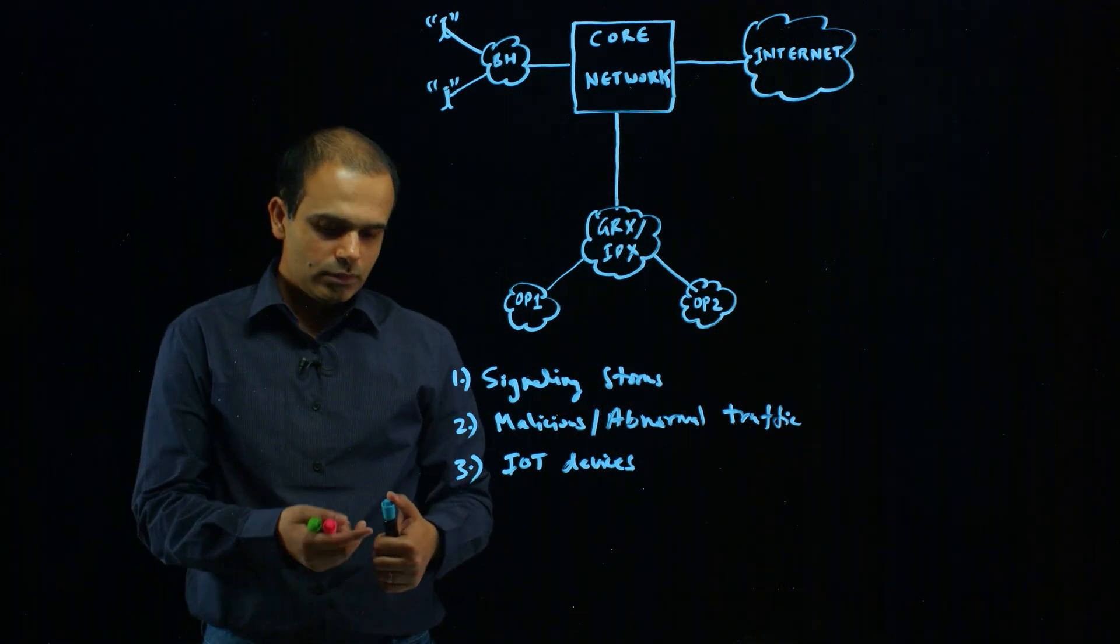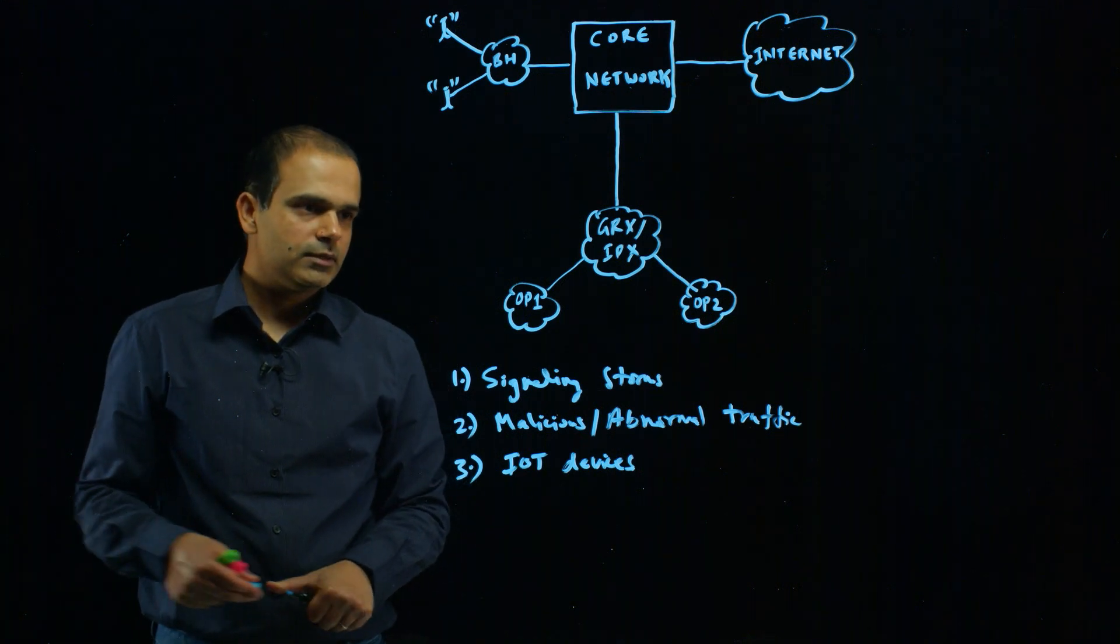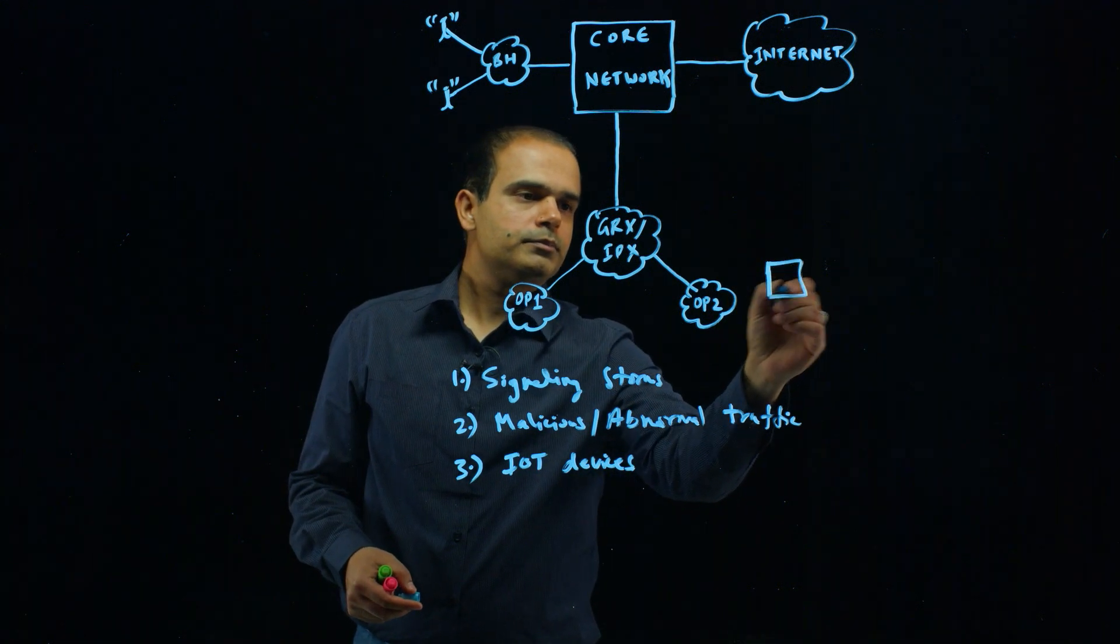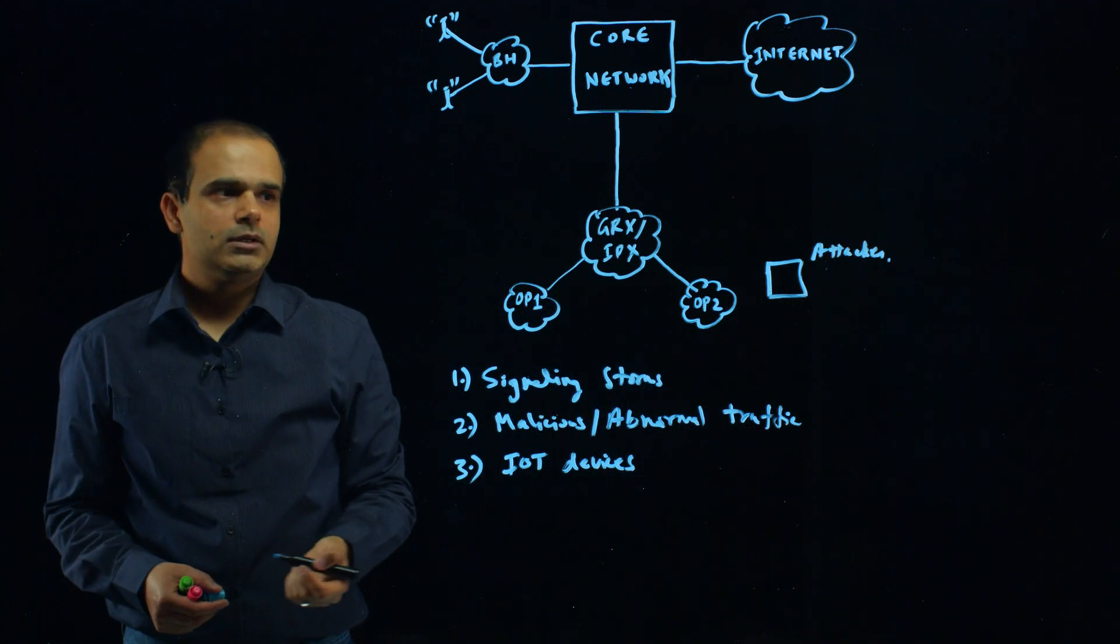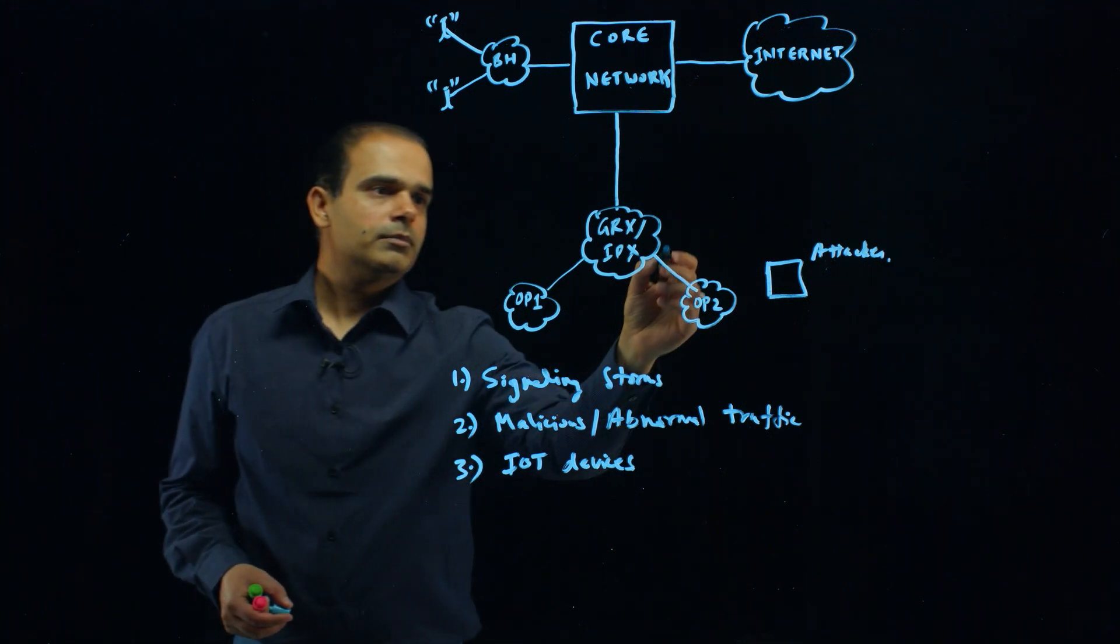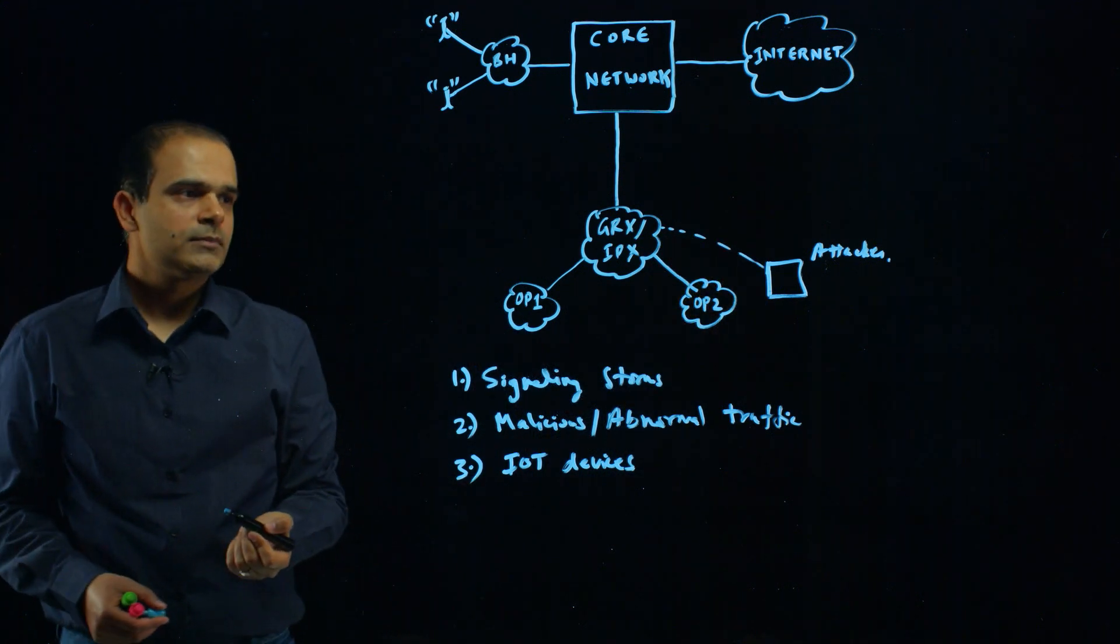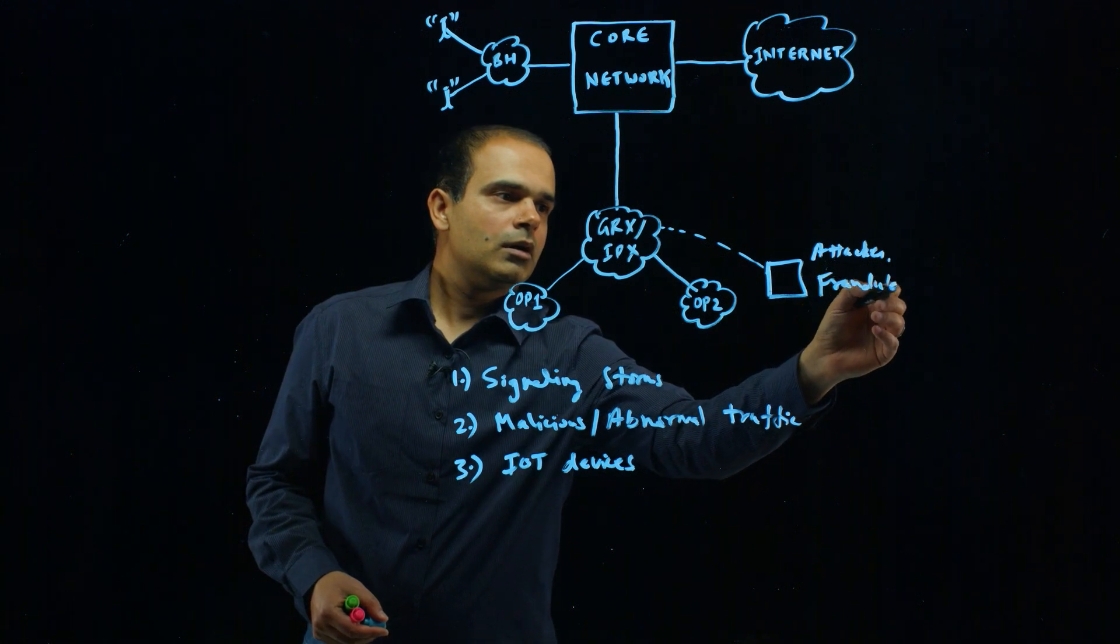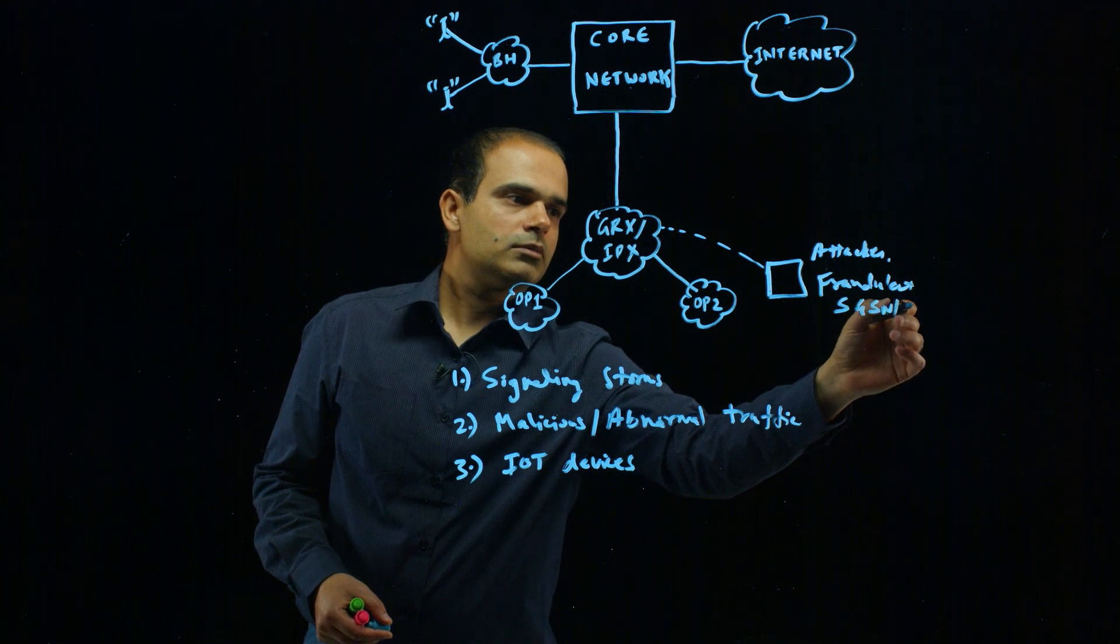Let's take a deeper look into one of these types of attacks. The attacker can gain access to the IPX GRX network and connect itself to this network. It can set up a fraudulent network node, say SGSN or S-gateway.